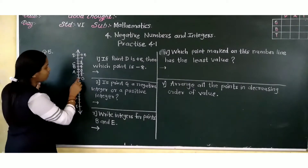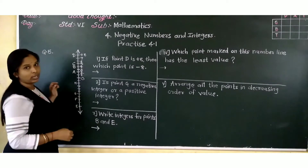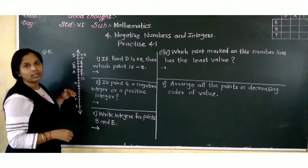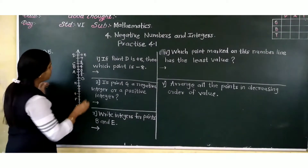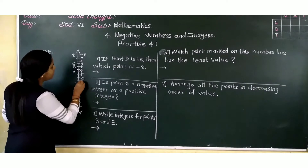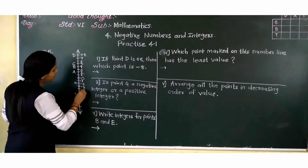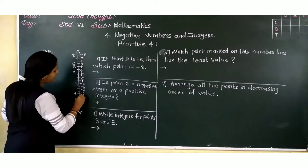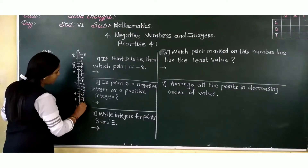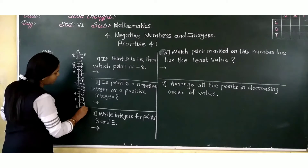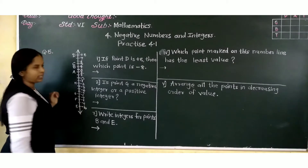Now after 0 on this side, what will be there? Negative. So that is minus 1, minus 2, minus 3, minus 4, minus 5, minus 6, minus 7, minus 8, minus 9.